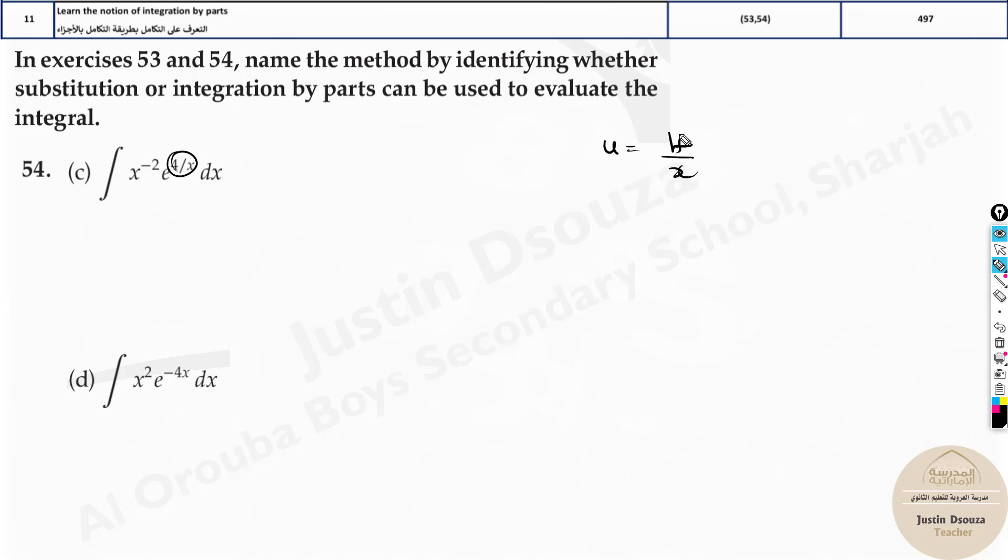Now I know this is basically 1 by x. Whatever is there, you're taking it as u. It's in terms of 1 by x. What is the derivation of that? Du by dx will be minus constant as it is. This is 4 by x squared.